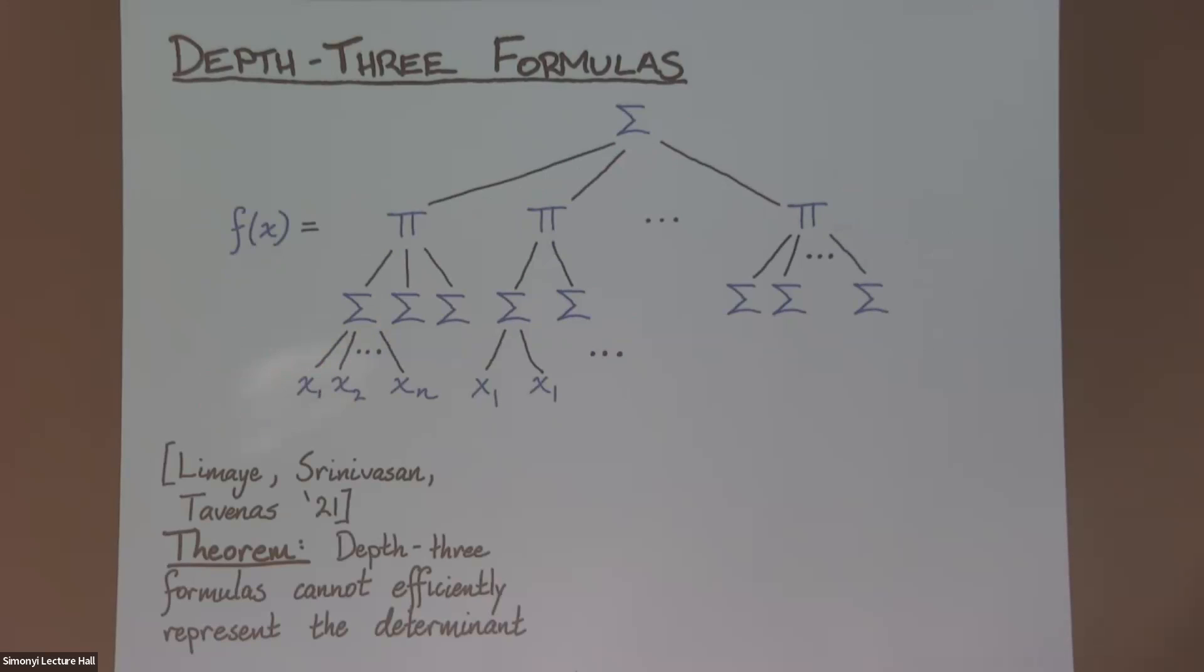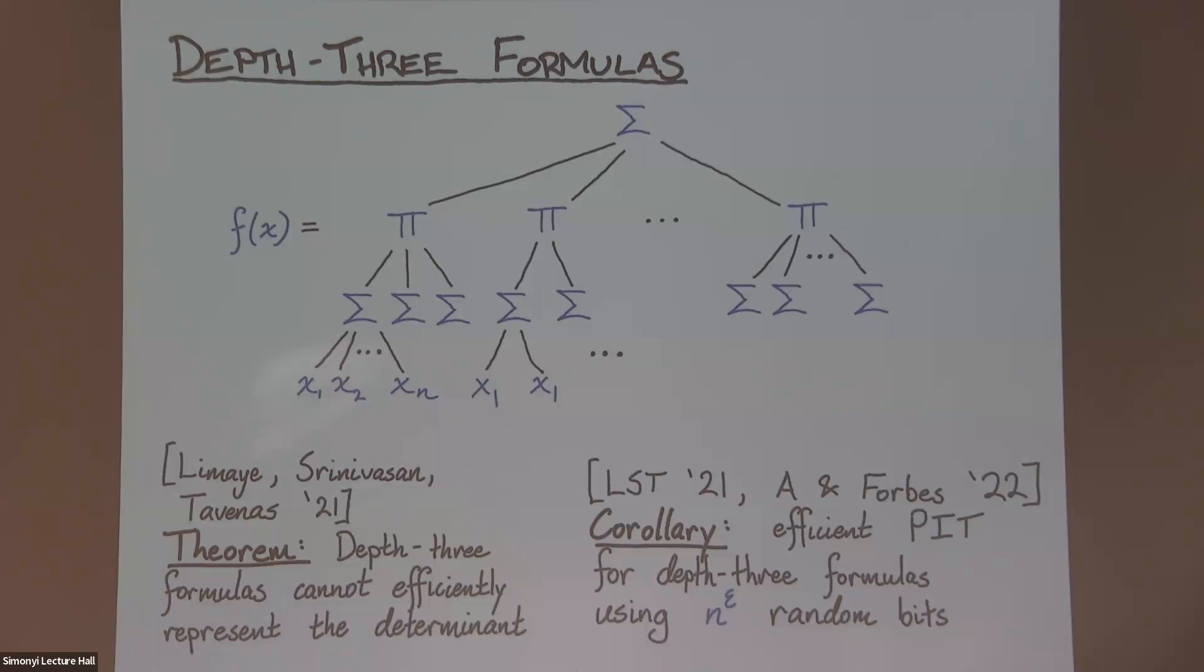So, what can you say about this? In fact, there was this really wonderful breakthrough work just a few years ago that proved computational lower bounds for this kind of representation of polynomials. So, we know that if you were to try and write the determinant as one of these depth-3 formulas, you just cannot efficiently represent the determinant this way. You have to pay a lot to write the determinant as one of these formulas. And as a corollary of that, you can actually design efficient identity testing algorithms when I represent a polynomial in this way, where these algorithms are only going to use something like n to the epsilon randomness. So, we actually have some progress here. There are two algorithms for this. One was given as a corollary of this lower bound by Limaya, Srinivasan, and Tavana. And then in some work later, together with Michael Forbes, we designed a different algorithm. It also uses this lower bound in a crucial way, but the algorithm is different and maybe a little bit more explicit in its description.